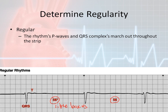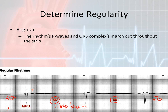Since there are 56 boxes between each QRS, if we go all the way to the right there's going to be another 56, and all the way to the left there's going to be another 56. So I'm betting this rhythm is going to be considered regular. If you were to take your calipers, you could measure between the QRSs and it would also come up as regular.